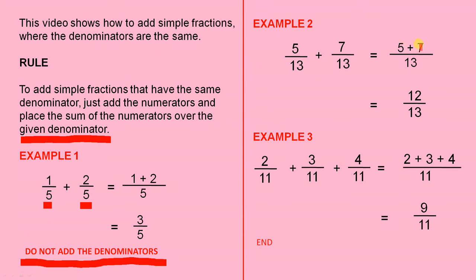5 plus 7 gives me 12. 12 and the given denominator is 13. So the answer is 12 over 13. Notice we did not add the denominators. That is still 13.